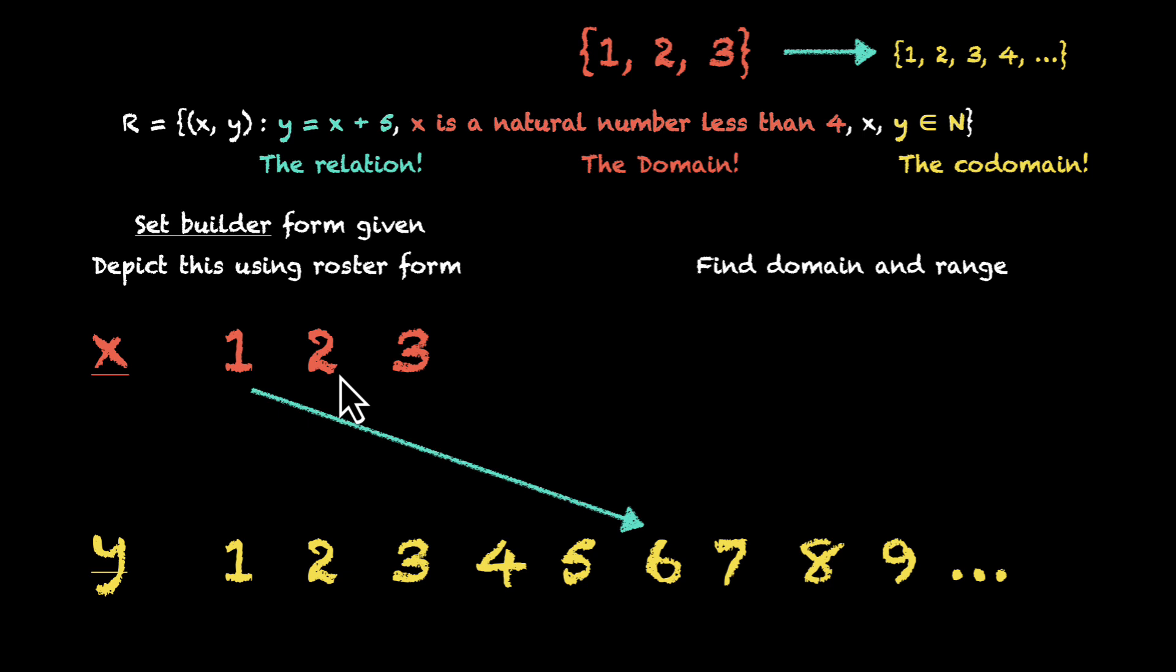If you put in two, we get two plus five equals seven. So two and seven are related. And then similarly, three and eight are related. We won't get any other value because we only have these three for x. This means that six, seven, and eight together form the range of this relation. So we have the domain and we have the range.